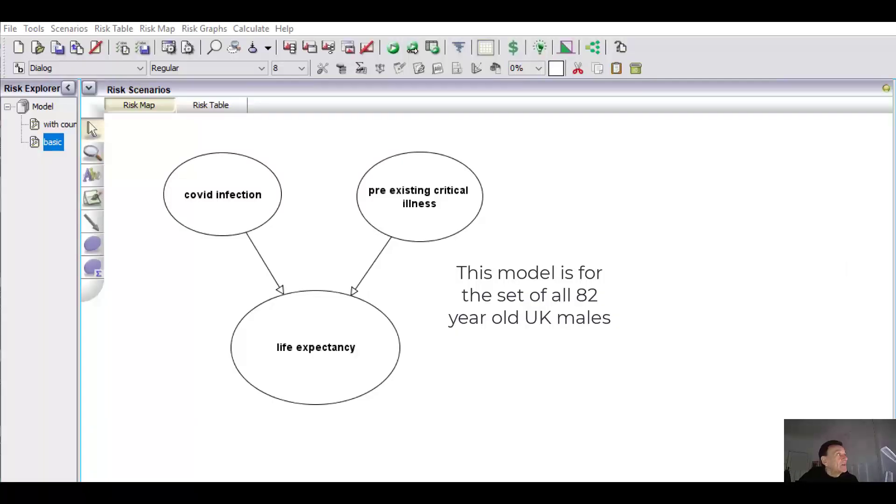First, we need a causal model of the real world. And here is such a basic, simplistic causal model. This tells us that a man's life expectancy depends not just on whether the person becomes infected with Covid, but also on many other factors, including whether the person has a pre-existing critical illness.